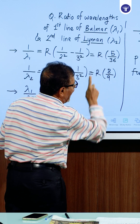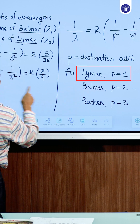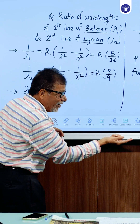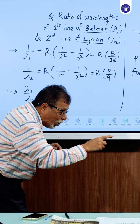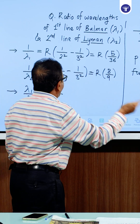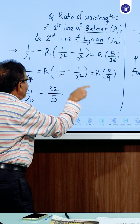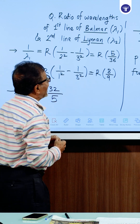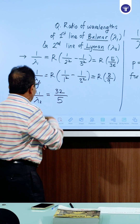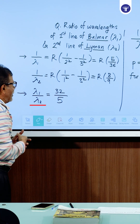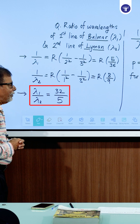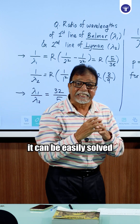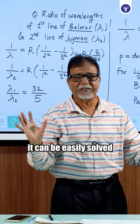For lambda 2, the series is Lyman, which means the P value is 1. This is the second line, so the transitions are 1 to 2 and 2 to 3, meaning the n value will be 3. So 1 upon lambda 2 equals 8R upon 9. Dividing, lambda 1 upon lambda 2 will be 32 upon 5. It can be easily solved.